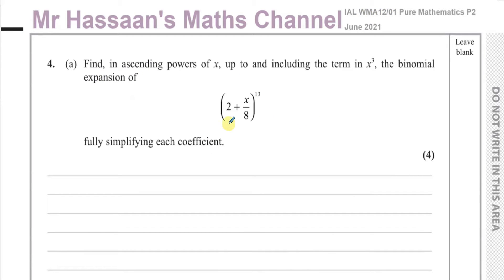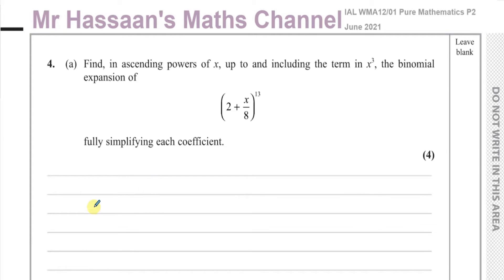We want to expand (2 + x/8) to the power of 13, up to and including the term in x cubed, fully simplifying each coefficient — that's part A. In P2, where you're only dealing with positive integer powers, a very simple method is to use the nCr button in your calculator to work out the main coefficient, and it's pretty easy to set up.